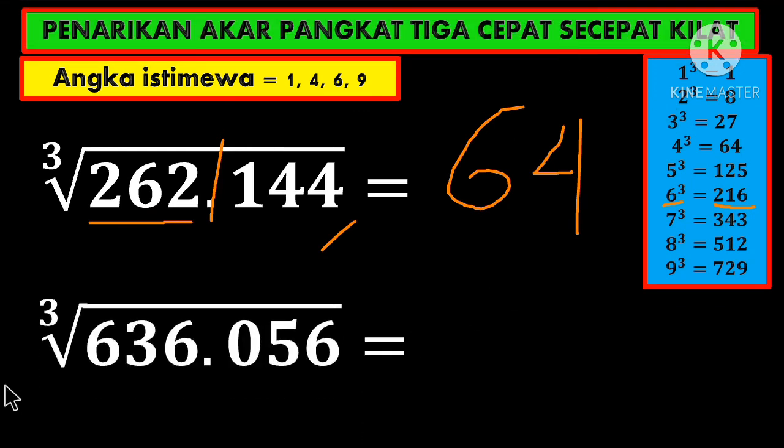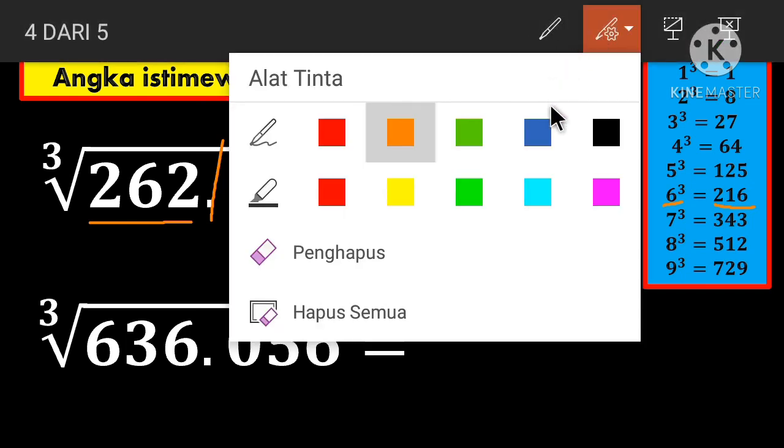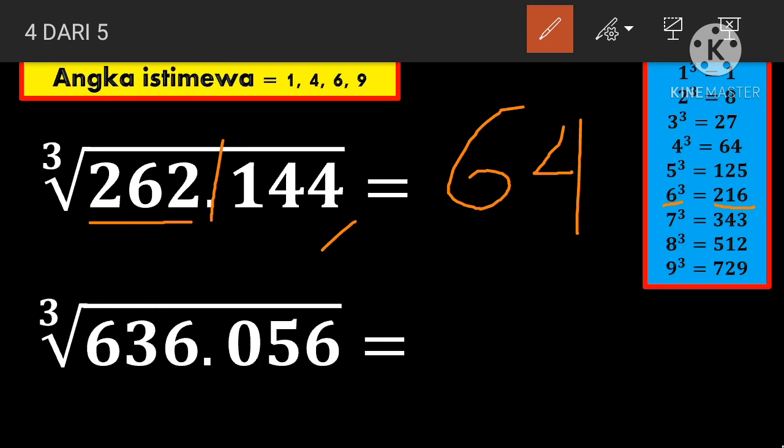Then the last example: cube root of 636,056. Same method, we separate first at the thousands place. Notice the 6 here—it's there, so the last digit is 6. We look at 636, which one is closest? That's 512, so here it's 8, making the answer 86. How about that? Very easy, right?